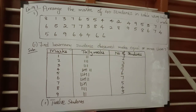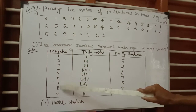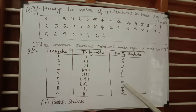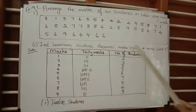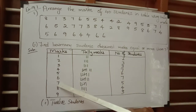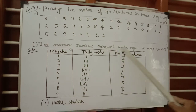In the marks column, we need to count how many students obtained marks equal to seven or more than seven. The relevant values are seven, eight, and nine. The number of students who obtained mark seven is five, mark eight is four, and mark nine is three. So the total is five plus four plus three, which equals twelve students.